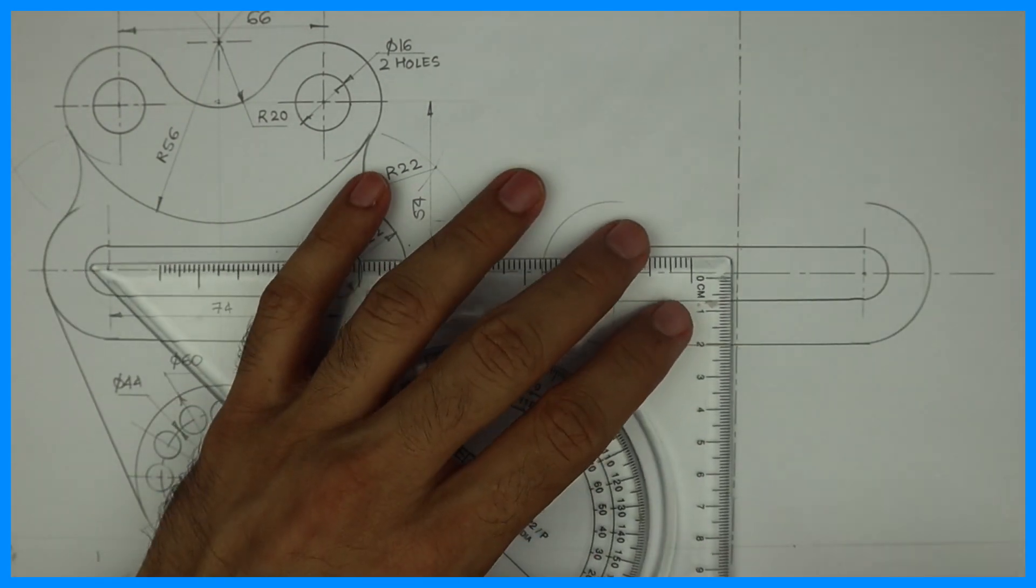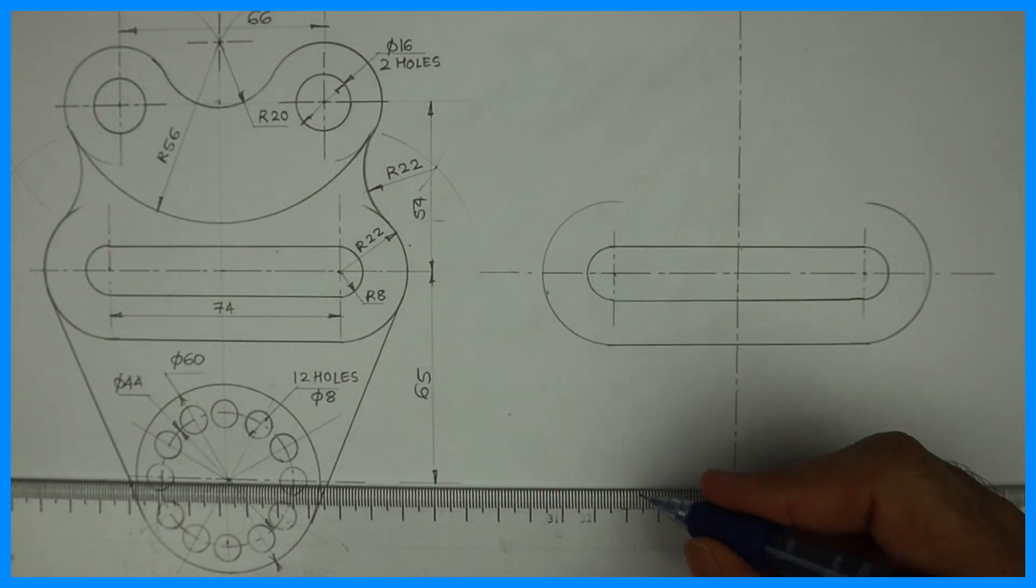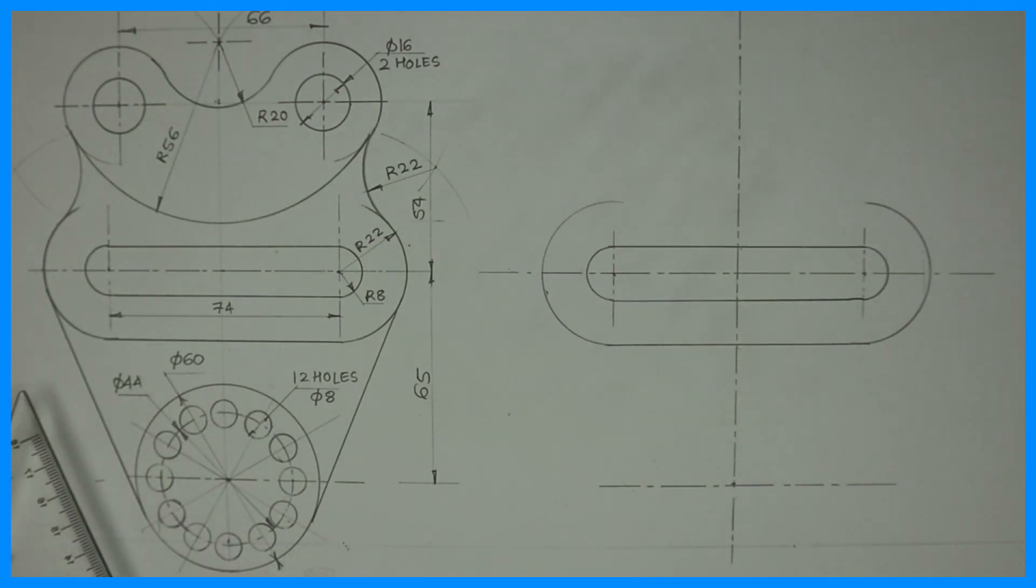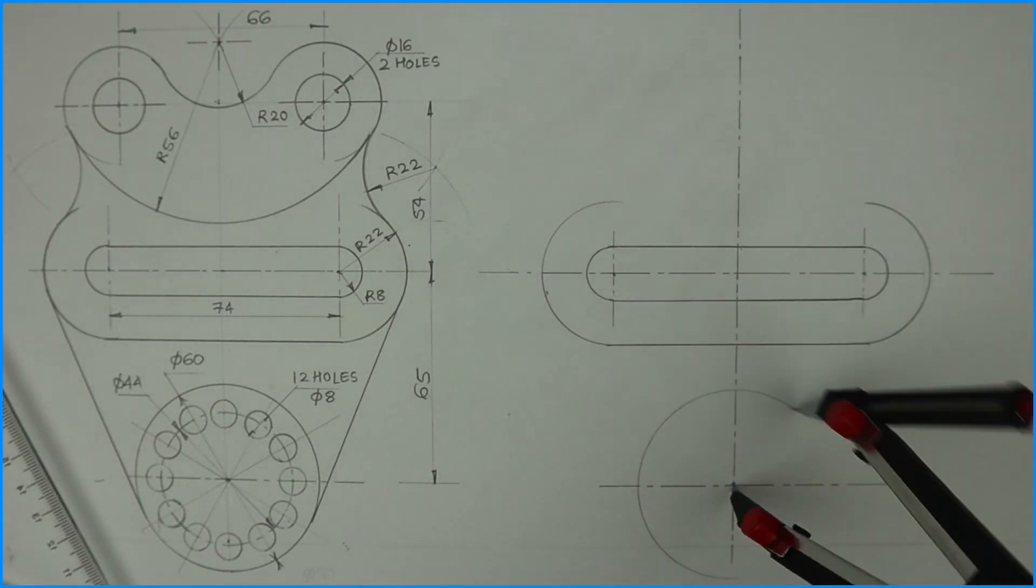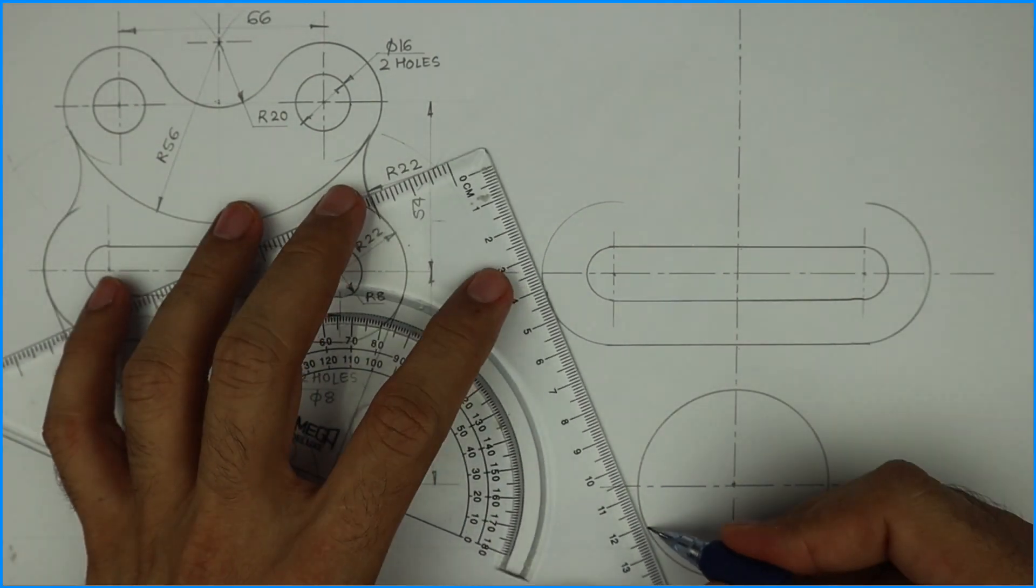After drawing this we'll go down by 65 and draw a circle of radius 30. So you take 30 and you draw a circle, then you can draw the tangent.